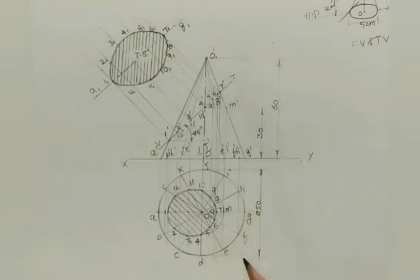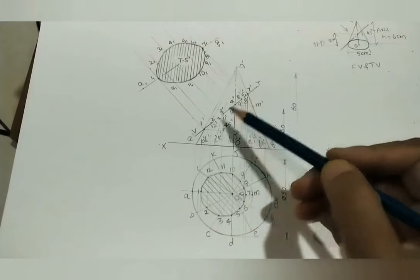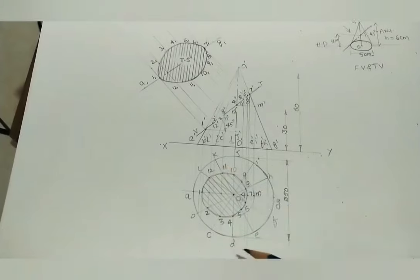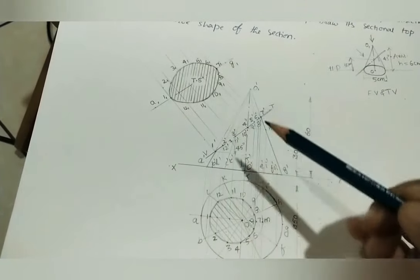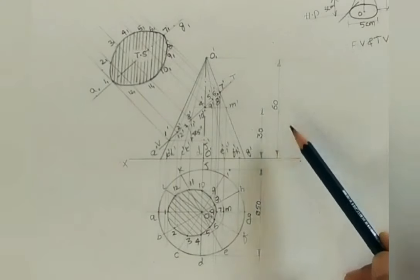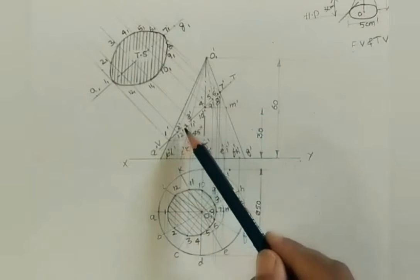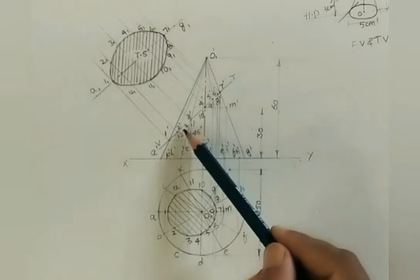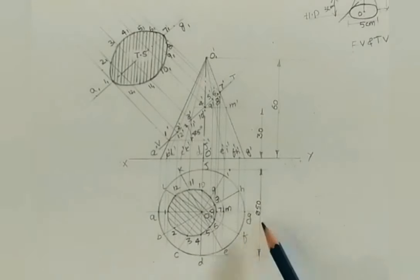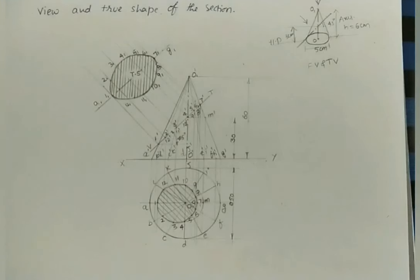This is the true shape of the section — in shortcut form written as TS. This is the sectional top view. The cutting plane is shown, and we are removing the top part; the remaining part should be in dark color. The sectional top view and true shape are also in dark color. Mark the given dimensions: height of cone is 60 mm, the cutting plane tilts at 45 degrees passing through the middle of the axis at 30 mm, and the diameter of the base is 50 mm. For other sections of solids videos, the link will be given in the description box.